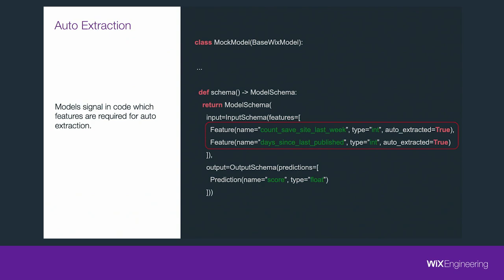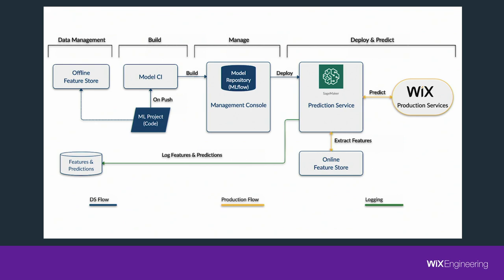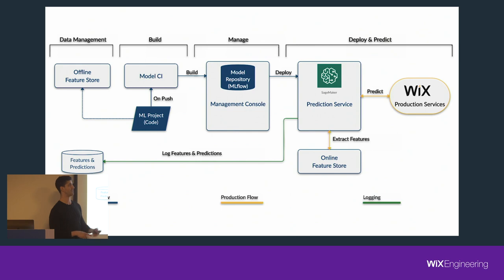This part neatly ties the entire platform together from feature creation and data generation to model schema registration on build time and feature extraction in production — probably my favorite part of the project. Let's do a recap left to right: first, the offline feature store — a single discoverable source of truth for features used by models, based on the notion of a single feature definition. Next, the model CI — model repository and CI system based primarily on MLflow, specifically the MLflow projects component. Above that, our in-house management console — the data scientist control plane, the central place to manage features, datasets, and models. And the centralized prediction service, which acts as a gateway to ML models deployed on SageMaker, giving us: an API layer, a health dashboard, automatic feature extraction, and standardized logging of features and predictions.